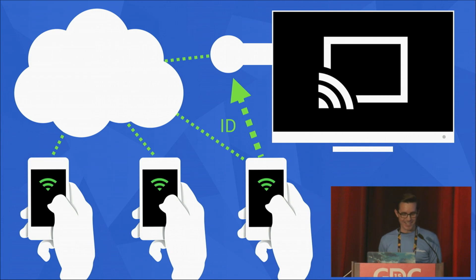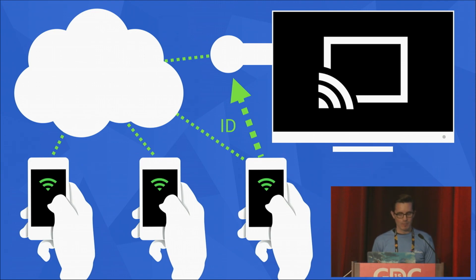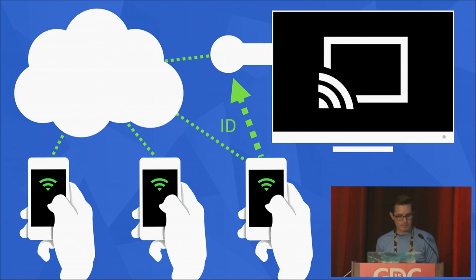In the cloud-centric model, a cloud service manages most of the game and player state and keeps all clients in sync. In this setup, both the senders and the receiver are clients of the cloud service. Google Play game services can also be used for cloud-enabled APIs. There are lots of different ways to make a game.